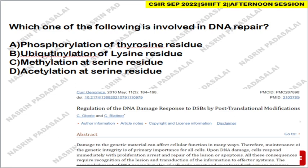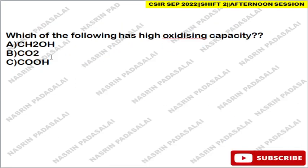Next: which post-translational modification is involved in DNA repair? Referring to the article on regulation of DNA damage response and double-strand break repair, ubiquitination of lysine residue is the correct option. Phosphorylation, methylation, and acetylation are the other options but ubiquitination of lysine is the correct answer for DNA repair.